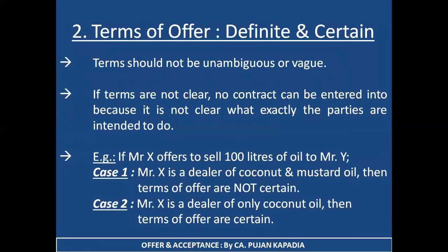The second rule: the terms of the offer — that is, whatsoever terms and conditions are stated in the offer — should be definite and certain. Definite means up to the mark, and certain means it should be clear, not ambiguous, not vague. The terms should not be unambiguous or vague. Whatsoever terms I am keeping in my offer should not be vague, should not be unclear, and should be easily interpreted.